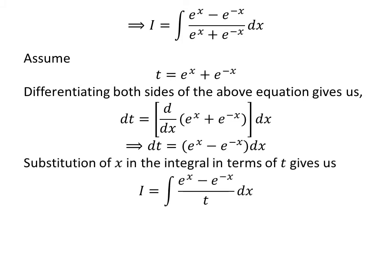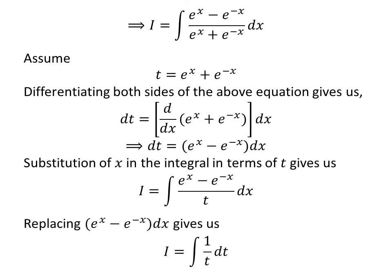Substituting exponential of x plus exponential of minus x by our assumed value t in the integral i gives us i is equal to the integral of exponential of x minus exponential of minus x upon t. Now, replacing exponential of x minus exponential of minus x times differential of x by differential of t, which we found earlier, gives us i is equal to the integral of 1 upon t with respect to t.